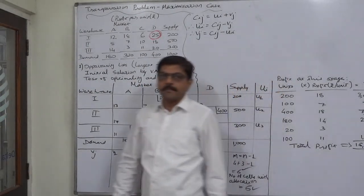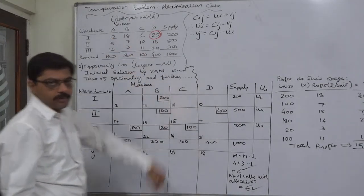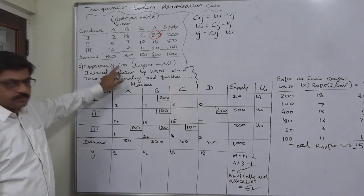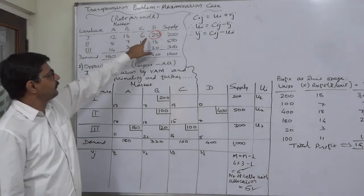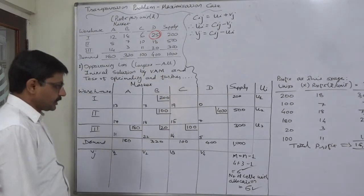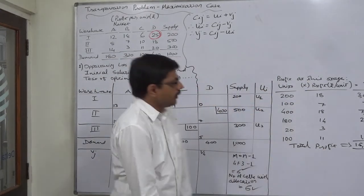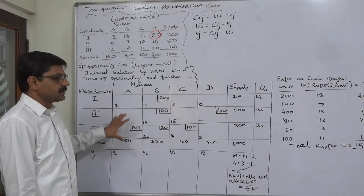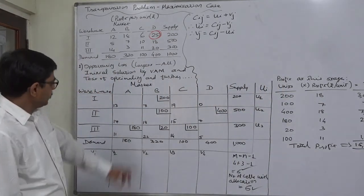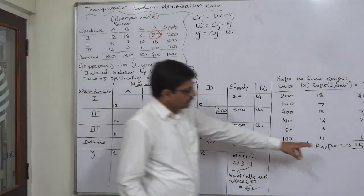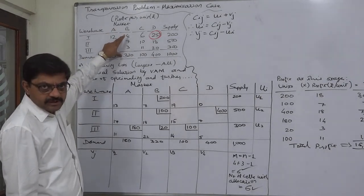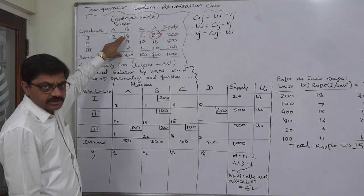Hello and welcome back. This will be part 3 of the solution of a transportation problem maximization case. In the previous two lectures, we first derived the opportunity loss matrix by subtracting all the per unit amounts of profit from the highest one. Then in the second lecture we obtained the initial solution by VAM (Vogel's Approximation Method). The initial solution shows a profit of Rs. 15,180. Remember, these are the opportunity losses, so to calculate the total profit we multiply the units of allocation with the per unit profit from the transportation table given in the question.